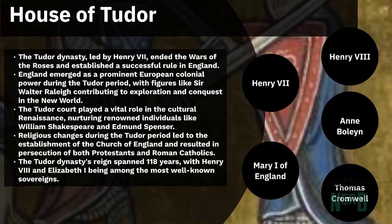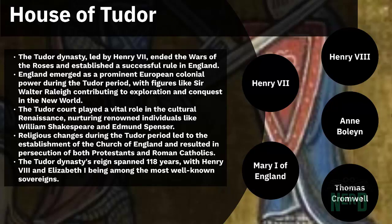Henry VII, his son Henry VIII, and his three children — Edward VI, Mary I, and Elizabeth I — collectively ruled England for 118 years. During this era, England emerged as a prominent European colonial power, with figures like Sir Walter Raleigh participating in the exploration and conquest of the New World. Additionally, English campaigns in Ireland solidified the country's control over the region.